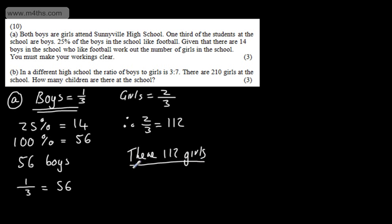So, three marks now for setting that up and making it clear. We know if boys are one third of the population, girls are two thirds. 25% is equal to 14. 100% is going to be 56. There are 56 boys.